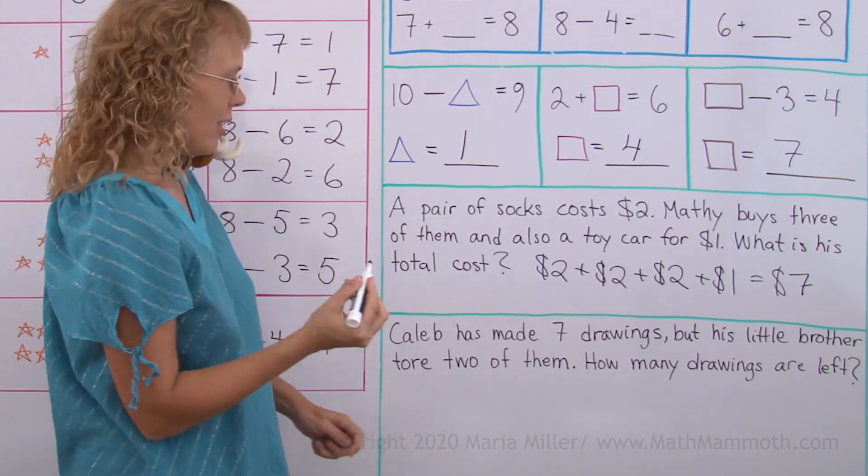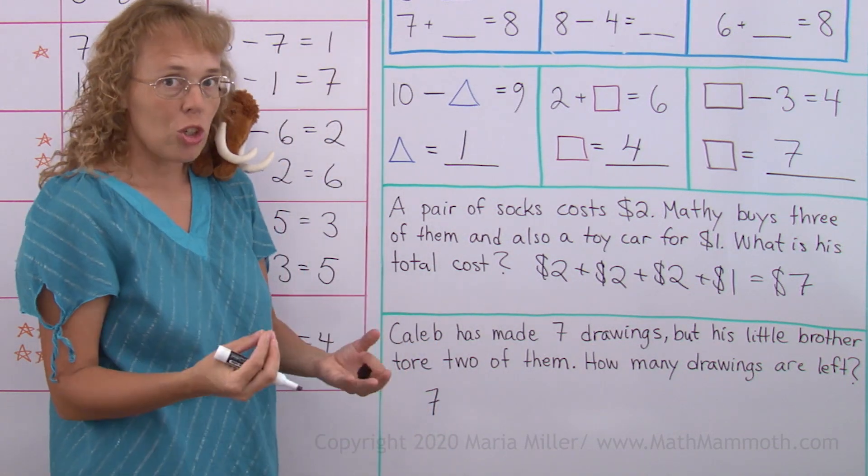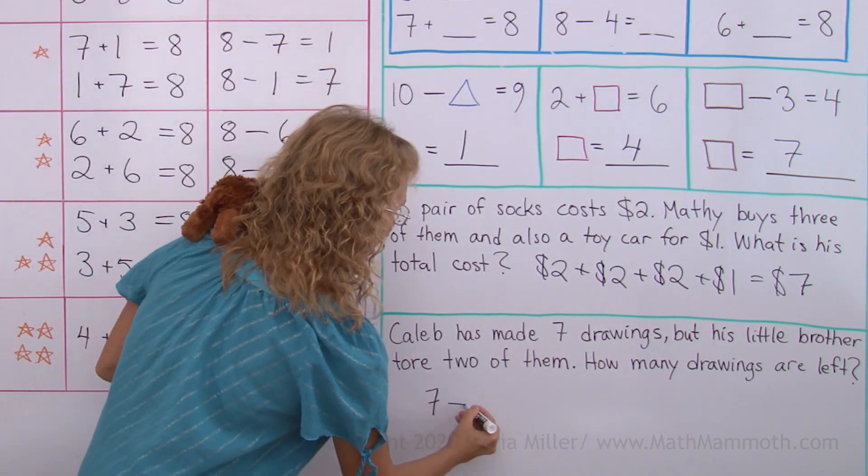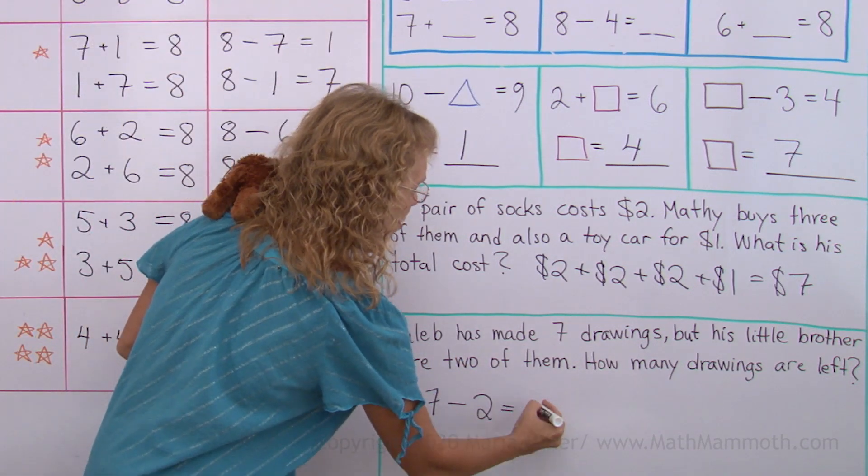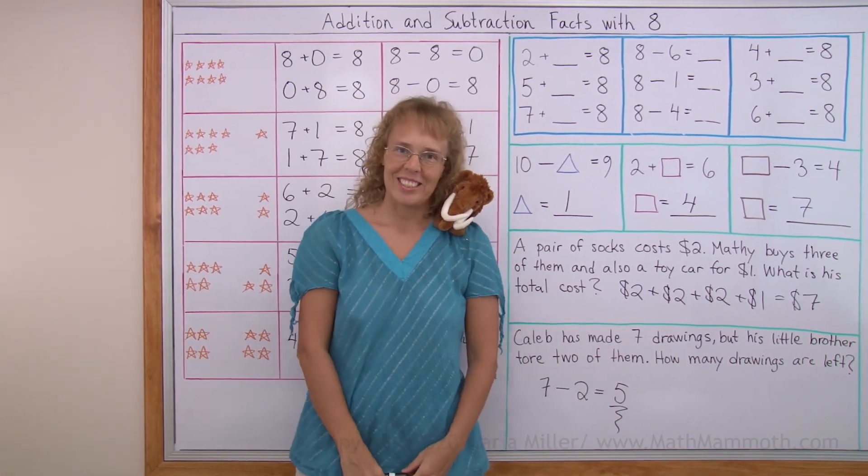Subtract, right? I mean, there are 7 in the beginning and some of them get torn. It is like going away. They go to trash, right? 7 minus 2. And that equals 5. 5 good drawings are left. Okay, well done with this lesson.